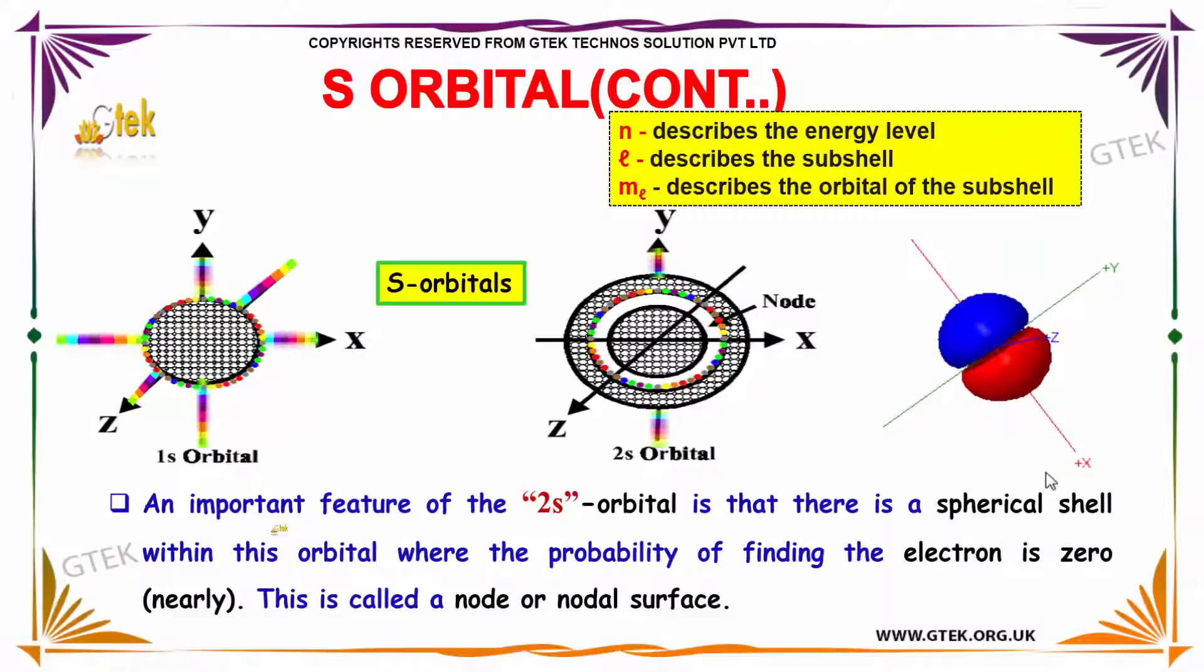An important feature of the 2s orbital is that there is a spherical shell within this orbital where the probability of finding the electron is zero. This is called a node or nodal surface.